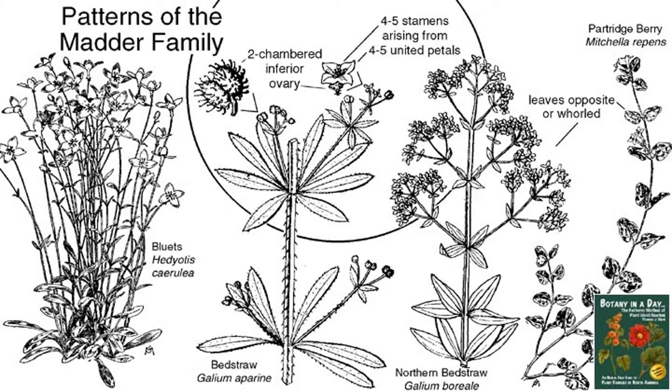The leaves are typically large and evergreen in the tropical plant species, deciduous in the temperate species, and needle-like or scale-like in the desert species.